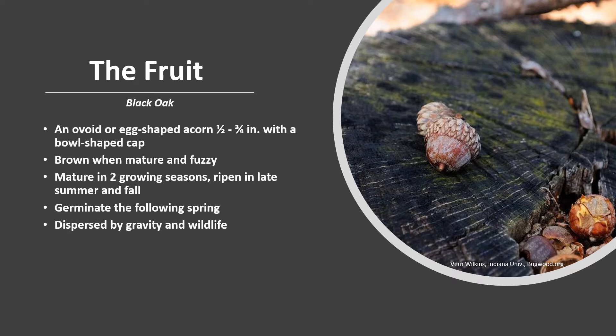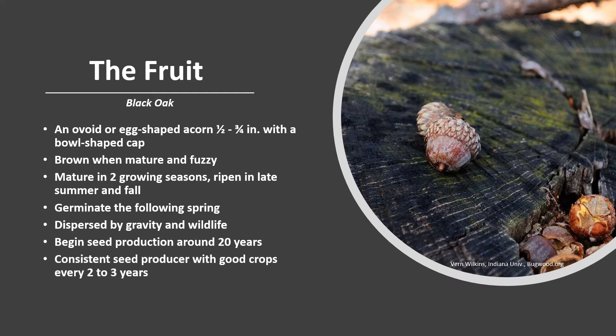The acorns are dispersed by gravity and wildlife, including squirrels, mice, and blue jays. Both rodents and birds often cache or store the acorns in the soil. Trees begin seed production around 20 years, with best production between 40 and 75 years. Black oak is a consistent seed producer, with good crops every 2 to 3 years.